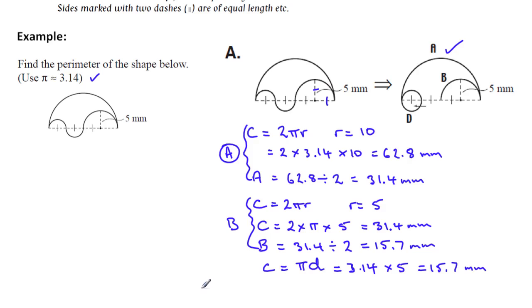And that gives us then the total perimeter. So the total perimeter is going to be 31.4, which is this one here, plus 15.7, which is the smaller one, plus 15.7 again, because we're having a full circle. So a total perimeter then of 62.8 millimeters.